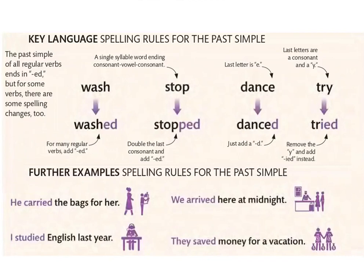I studied English last night — study ends in Y so يتحول لـ studied. We arrived here at midnight — 'arrive' ends in E so we add D only: arrived. They saved money for a vacation — 'save' ends in E so: saved.